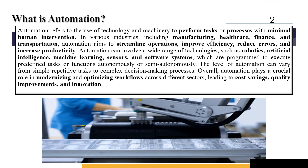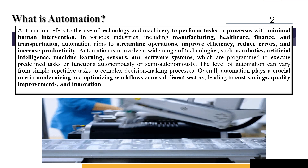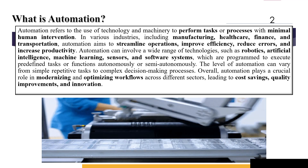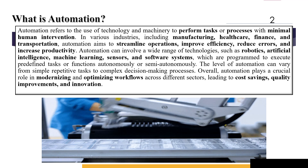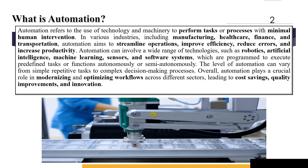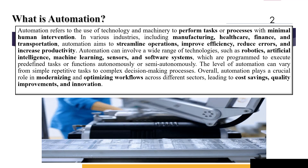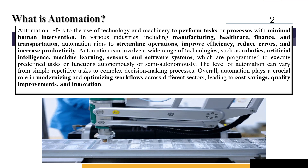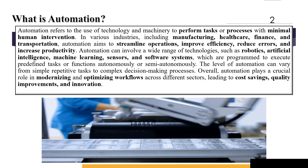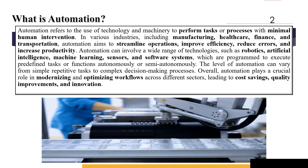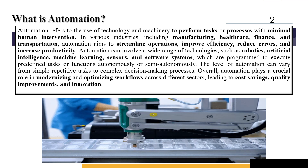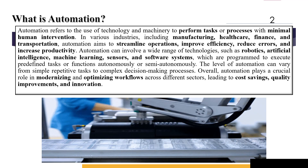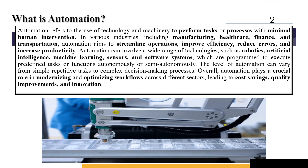So first of all, what do you actually mean by the term automation? Automation actually refers to the use of technology and machinery to perform tasks or processes with minimal amount of human intervention. In various industries including manufacturing, healthcare, finance, and transportation, automation is basically being used to streamline operations, improve efficiency, reduce errors, and increase productivity.